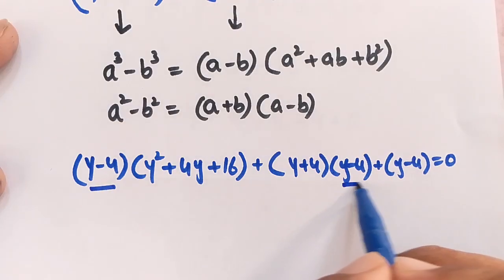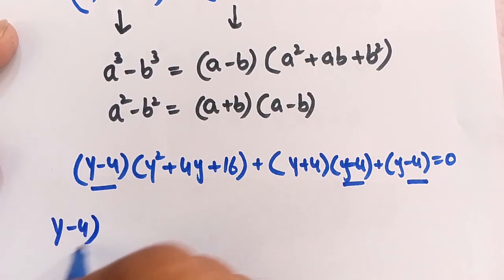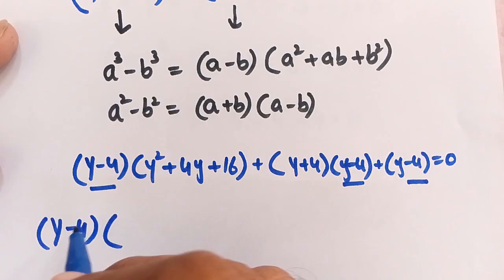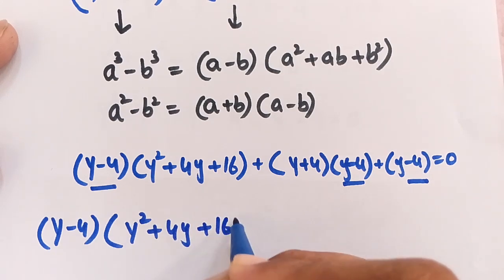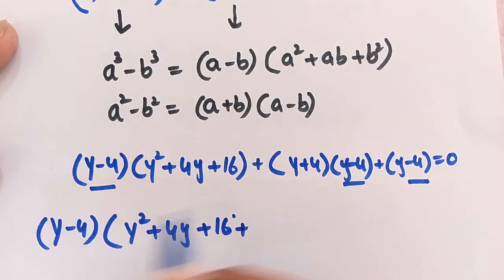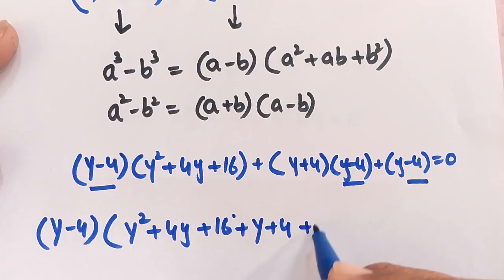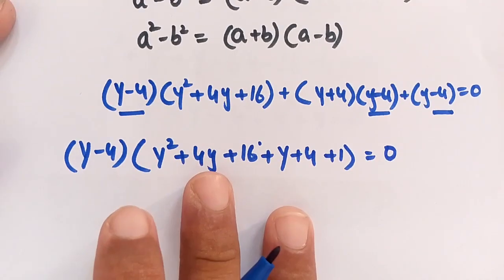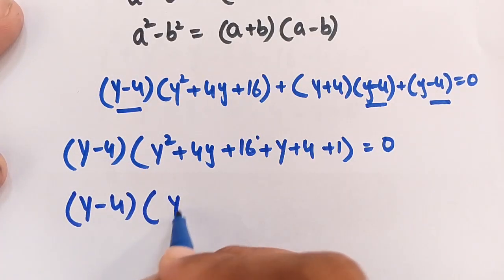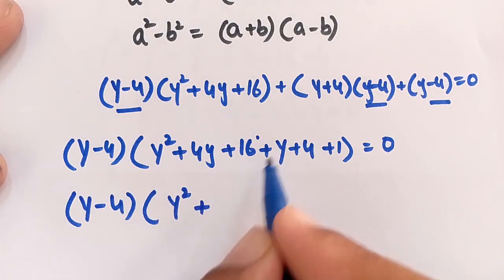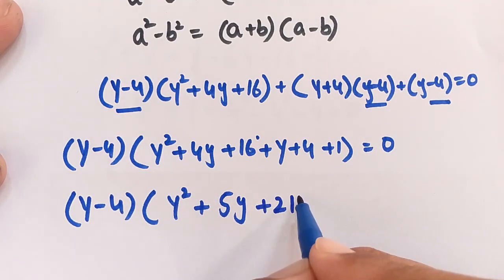The factor (y − 4) is common across all three terms, so we factor it out: (y − 4) times [y² + 4y + 16 + y + 4 + 1] = 0. Simplifying inside the bracket: 4y + y = 5y, and 16 + 4 + 1 = 21. This gives (y − 4)(y² + 5y + 21) = 0.